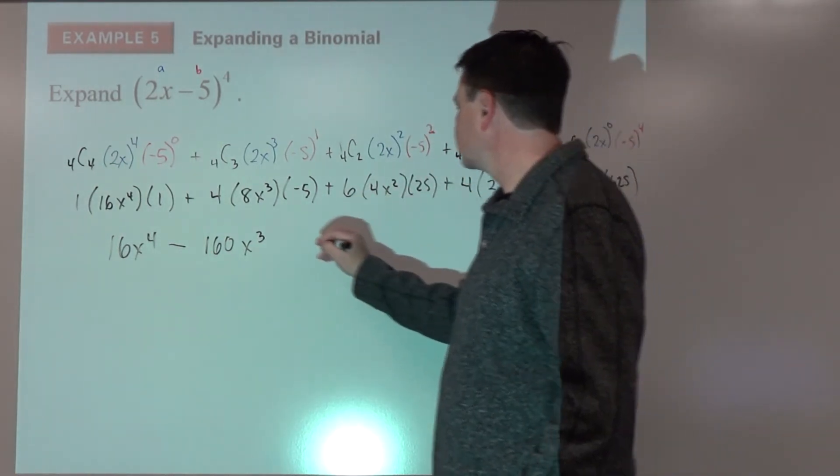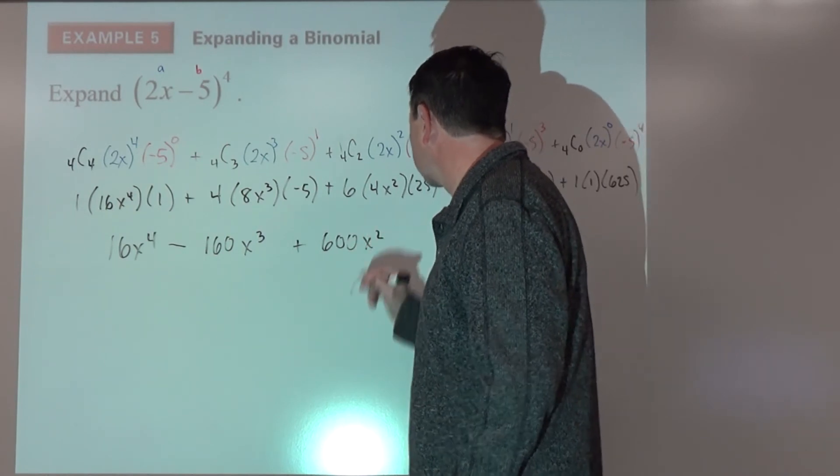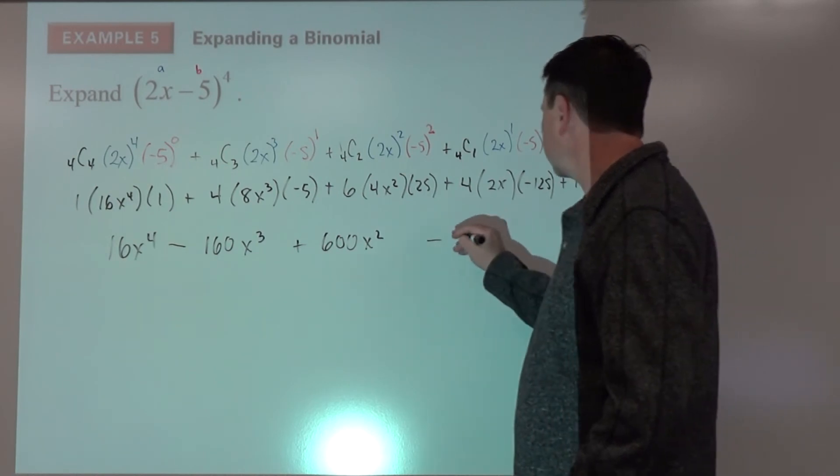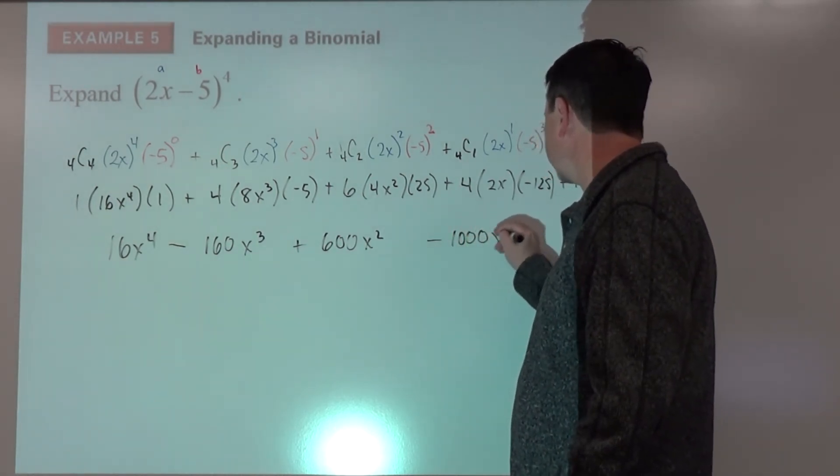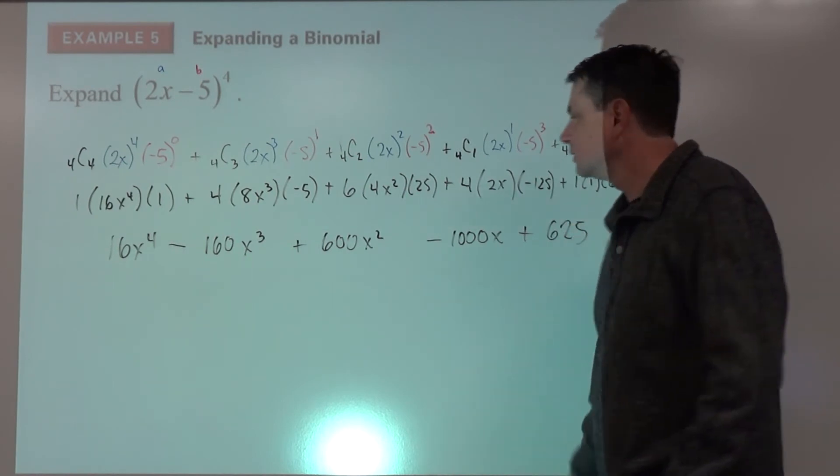100 times 6, plus 600x squared, minus 8 times 125, 1000x, plus 625.